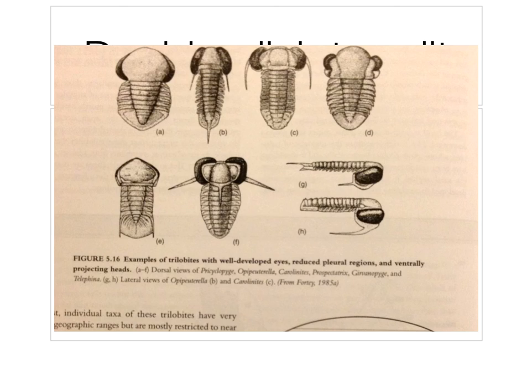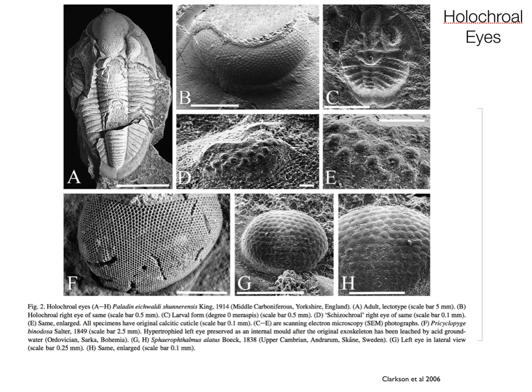A great example of this are trilobites with well-developed eyes. These trilobites all have really big eyes and their heads sort of stick out, and their eyes wrap around the sides of their heads. All of these taxa are swimming trilobites, which makes sense — if you're swimming, you need to look not only in front of you, but above and below you, whereas if you're on the seafloor you really only need to look in front of you and above you, not greater than about 90 degrees. We can use the structure of the trilobite's eyes to infer something about their function and how these organisms lived.